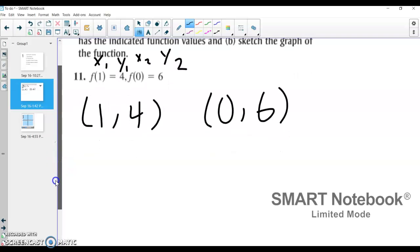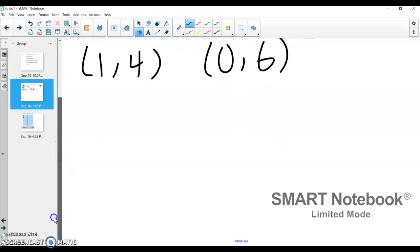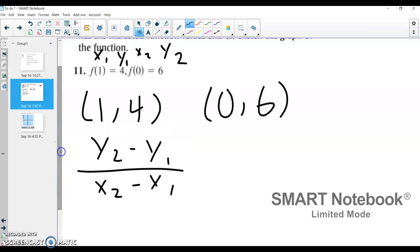Now I'm going to use those two coordinates to find the slope between these two points. So slope, again, is y2 minus y1 divided by x2 minus x1. This is my x1. This is my y1. This is my x2. This is my y2.